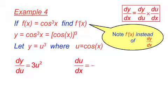Now we differentiate. dy/du equals 3u squared, du/dx equals minus sin of x. Notice I've moved back from f(x) and f'(x) to y and dy/dx.